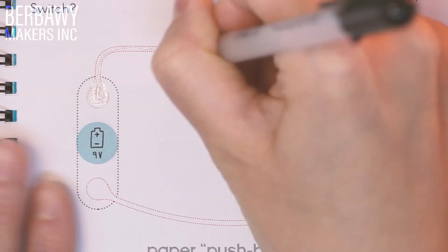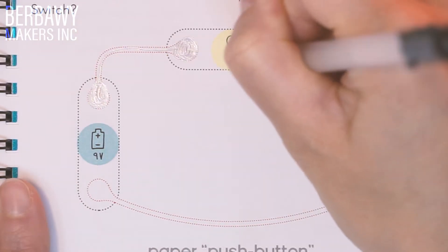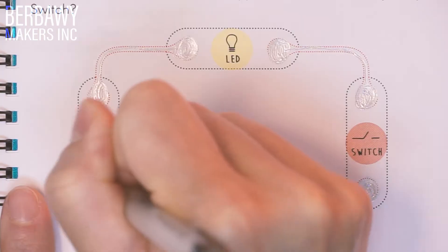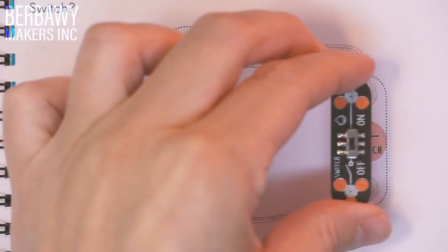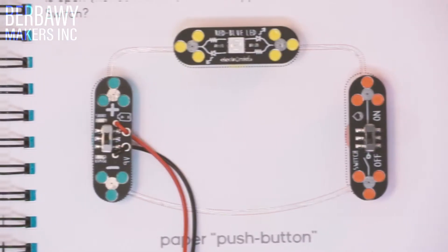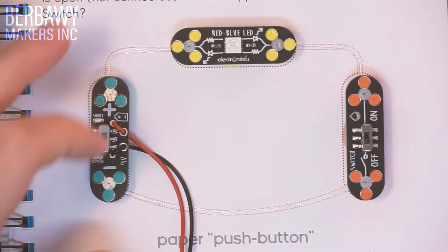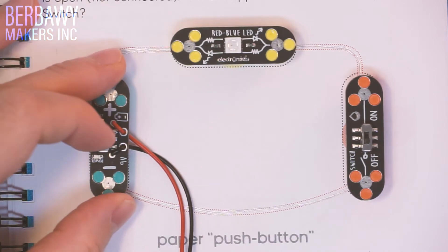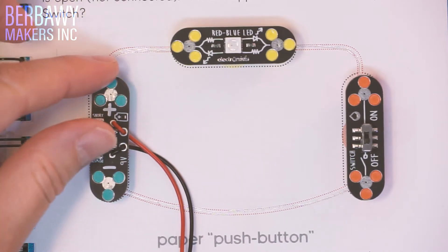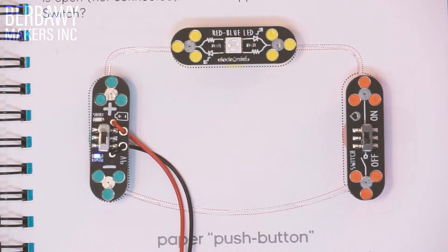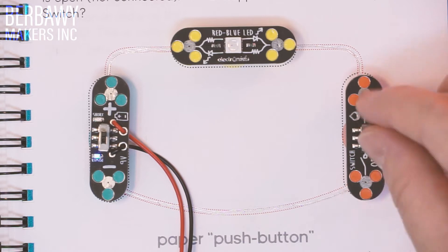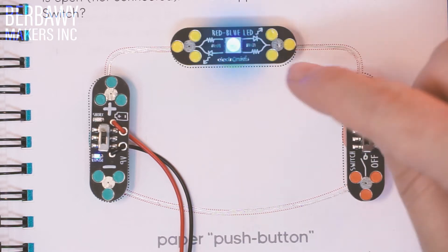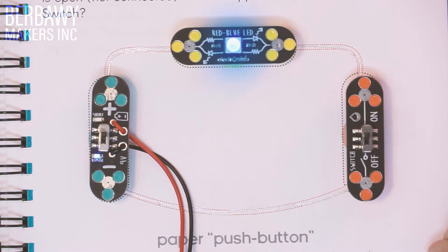Let's draw our traces to get started. Now that our traces are drawn, let's populate it with our components. Let's turn our battery on to see how all this works. So with our battery in the on position, if we have our switch in the on position, our LED comes on.